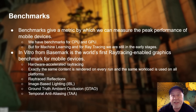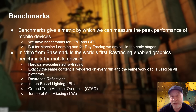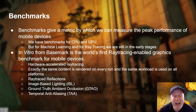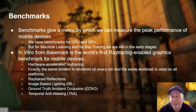Benchmarks give us a metric by which we can measure the peak performance of a mobile device. Normally we have benchmarks for CPU and GPU — Geekbench, 3DMark, Antutu, and several others. But areas where we're kind of missing good benchmarks are machine learning and this new ray tracing technology that appears in processors.